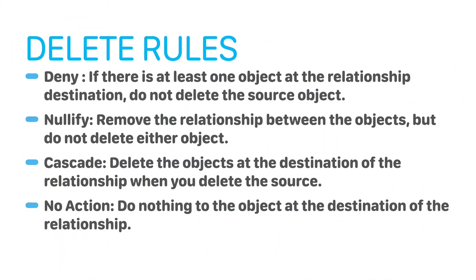Delete rules are also important for core data. Having good delete rules helps developers to easily choose which data they want to delete along with a relationship or not. Delete rules can be of four types. The first is deny: if there is at least one object at the relationship destination, do not delete the source object. The second is nullify: remove the relationship between the objects but do not delete either object. The third is cascade: delete the objects at the destination of the relationship when you delete the source. The fourth is no action: do nothing to the object at the destination of the relationship. Developers should choose based on what they want to do with the user's data.